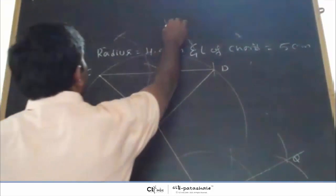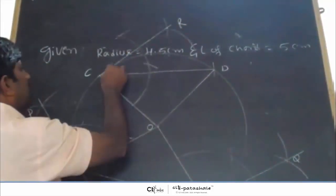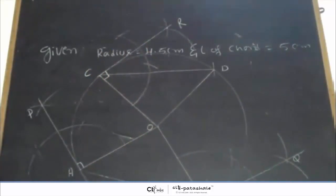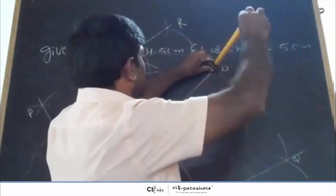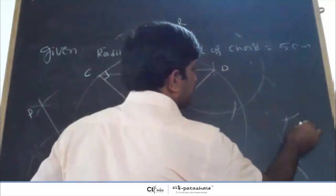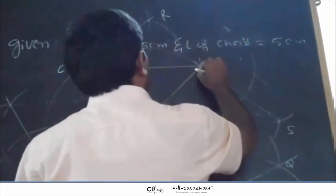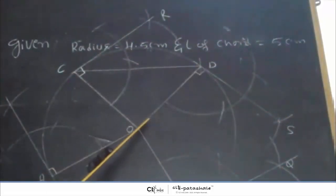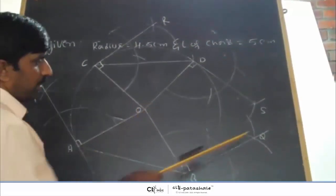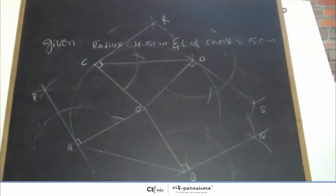Similarly, construct 90 degree angles at C and D. Mark point R at C so that angle OCR is 90 degrees, and mark the corresponding point at D so that angle ODS is 90 degrees. Here, angle OCR and angle OBQ are each 90 degrees. AP, BQ, TS, and CR are the required tangents at the ends of the chords.